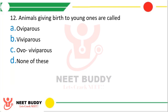Question twenty-two: animals giving birth to young ones are called as — option A, oviparous; option B, viviparous; option C, ovoviviparous; or option D, none of these? The correct answer is option B, viviparous. Oviparous are organisms that lay eggs; ovoviviparous are organisms that lay eggs, however the egg immediately hatches and the young one comes out as soon as the egg is laid.